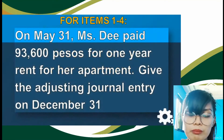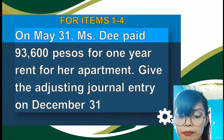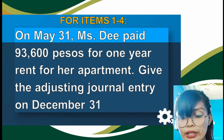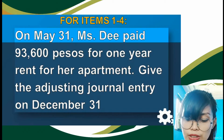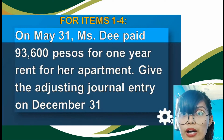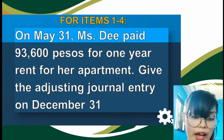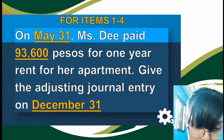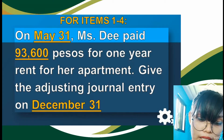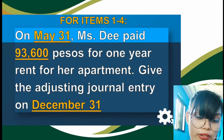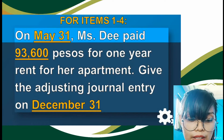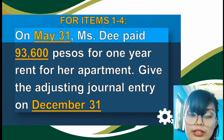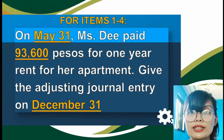For the first transaction, on May 31st, Ms. T paid P93,600 for one-year rent for her apartment. Give the adjusting journal entry on December 31st. The important given are: May 31st as start of the contract, P93,600 good for one year or 12 months, and December 31st as the cut-off date.